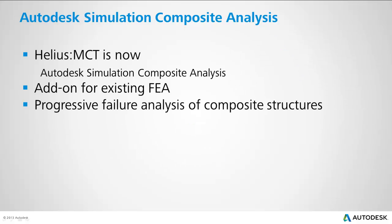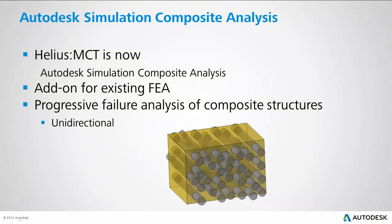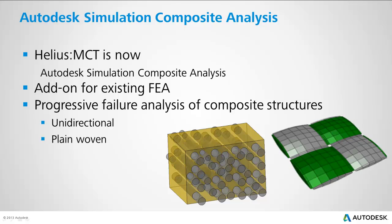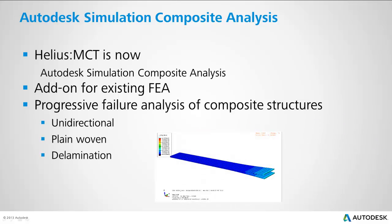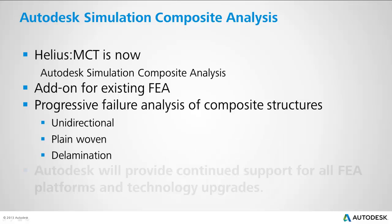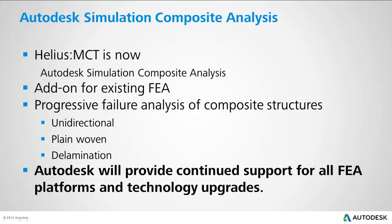The product currently supports progressive failure for continuous fiber unidirectional and plain woven lamina, as well as modeling delamination using cohesive elements. Continued platform support for existing FEA packages and new technology introduction into the software will continue as an Autodesk product. After talking with current customers, we decided to implement new technologies and expand the current capabilities of the software for the 2014 release.